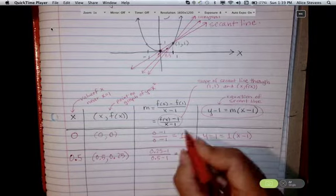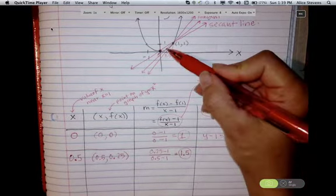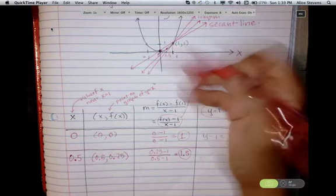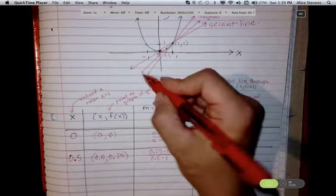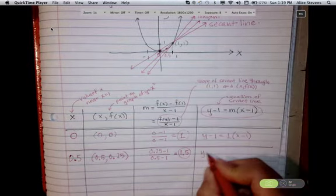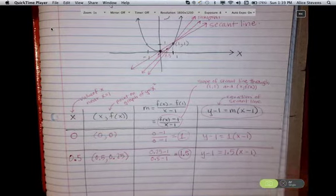So that gives me the slope of this line right here in the middle. And that tells me the equation of the new secant line is y minus 1 equal 1.5 times x minus 1.